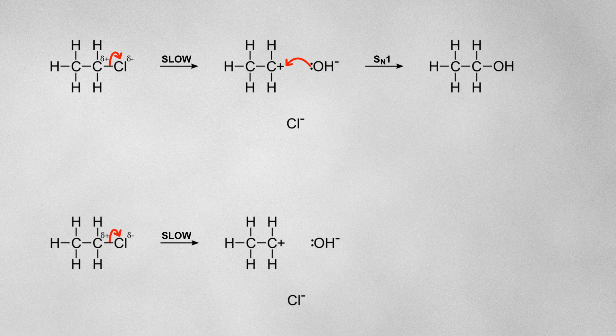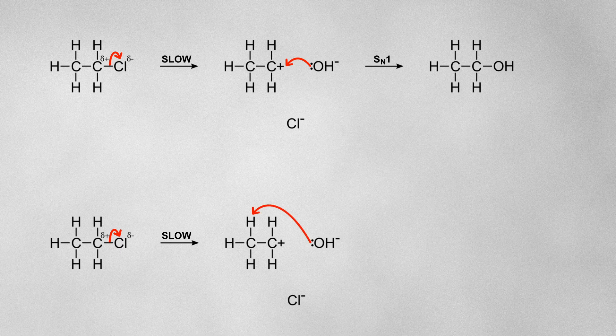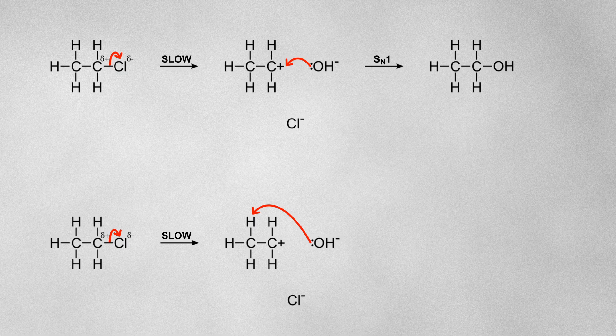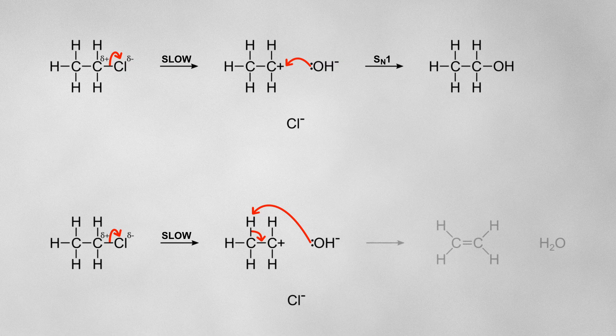The second option is that the hydroxide acts as a base and removes a hydrogen from the carbon adjacent to the carbon with the positive charge. This causes the electrons in the carbon-hydrogen bond to swing around and form a new carbon-carbon pi bond resulting in an alkene.